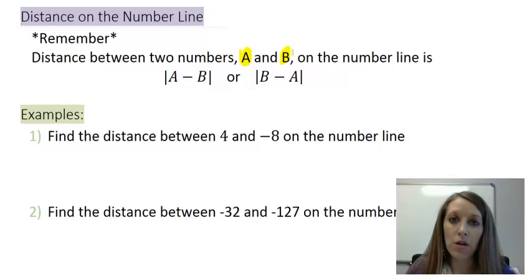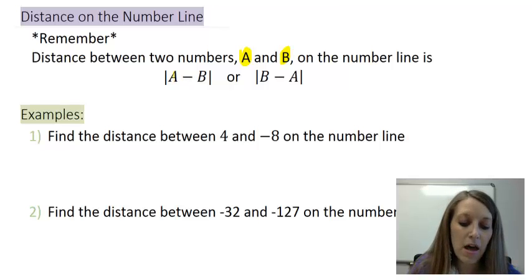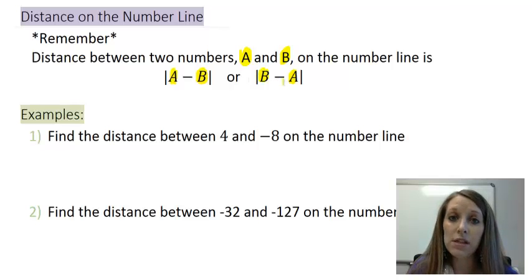The formula that we use is the absolute value of one of these numbers minus the other. And it doesn't matter if we take the first minus the second or the second minus the first, because we're going to end up with the same number.